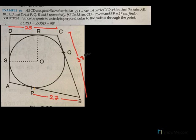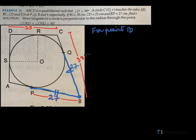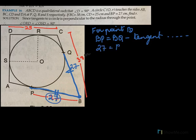So let's start with external point B. From B, I can draw two tangents, that is BQ equal to BP, and they will be equal. Which means if BP is 27, my BQ will also be 27. For point B, we have BP equal to BQ — tangents from an external point are equal. And BP was given to us as 27, so BQ is also 27.